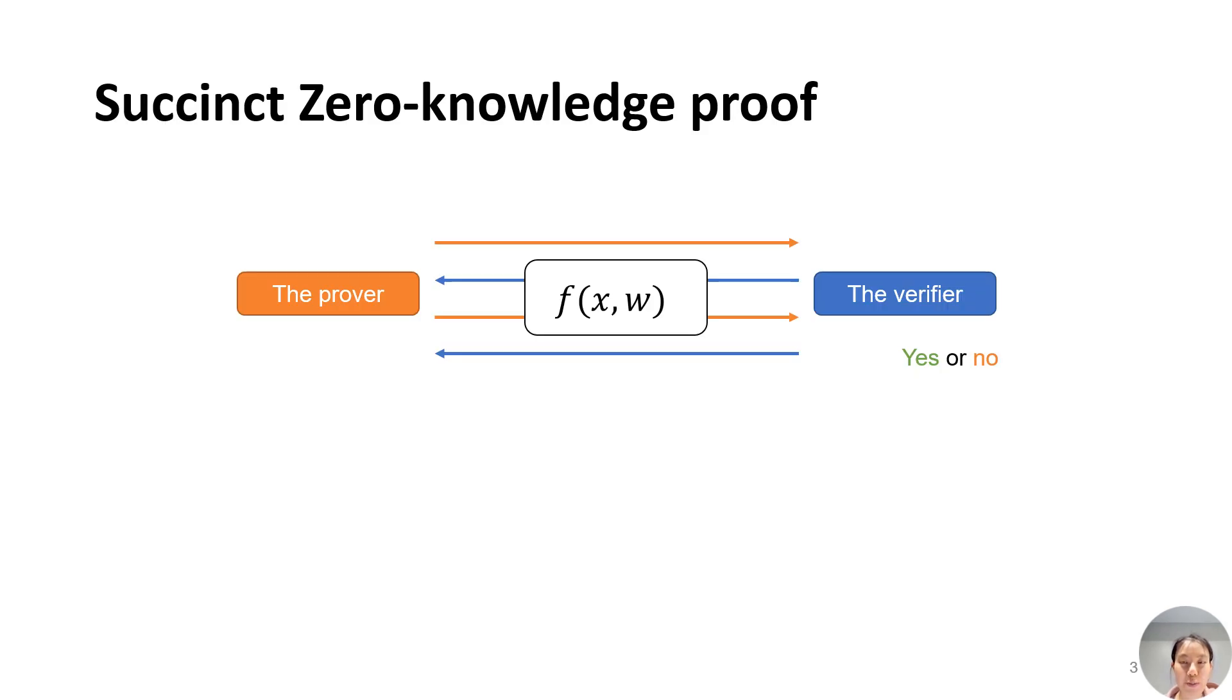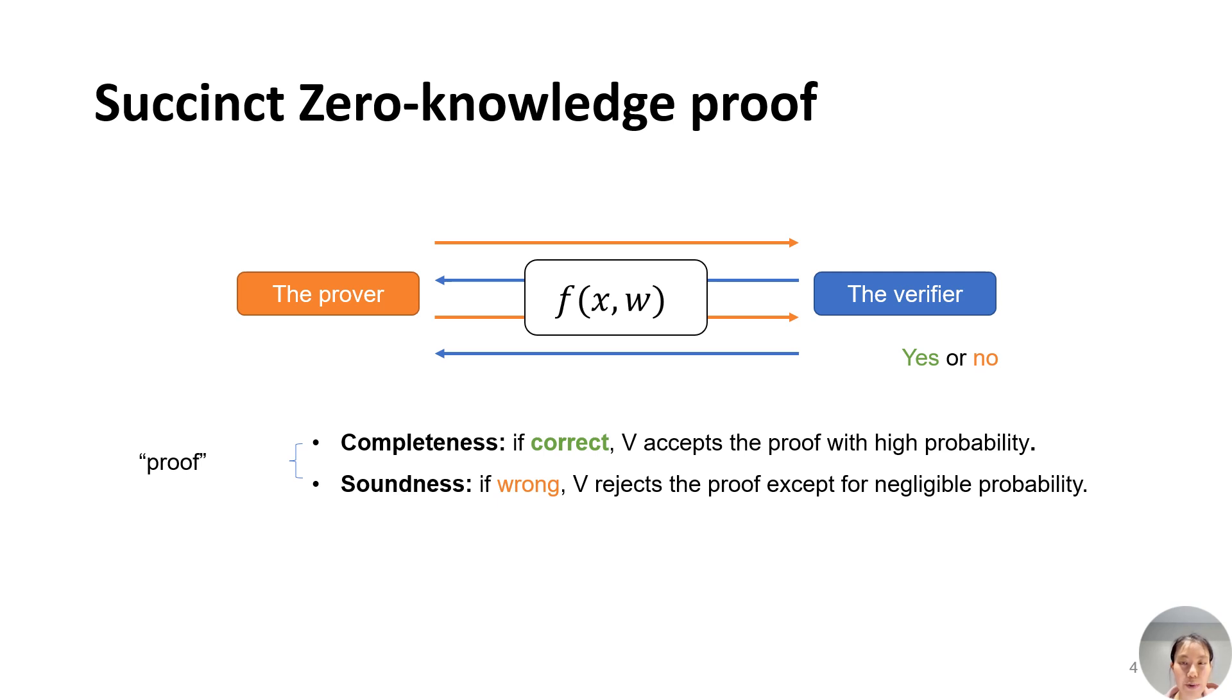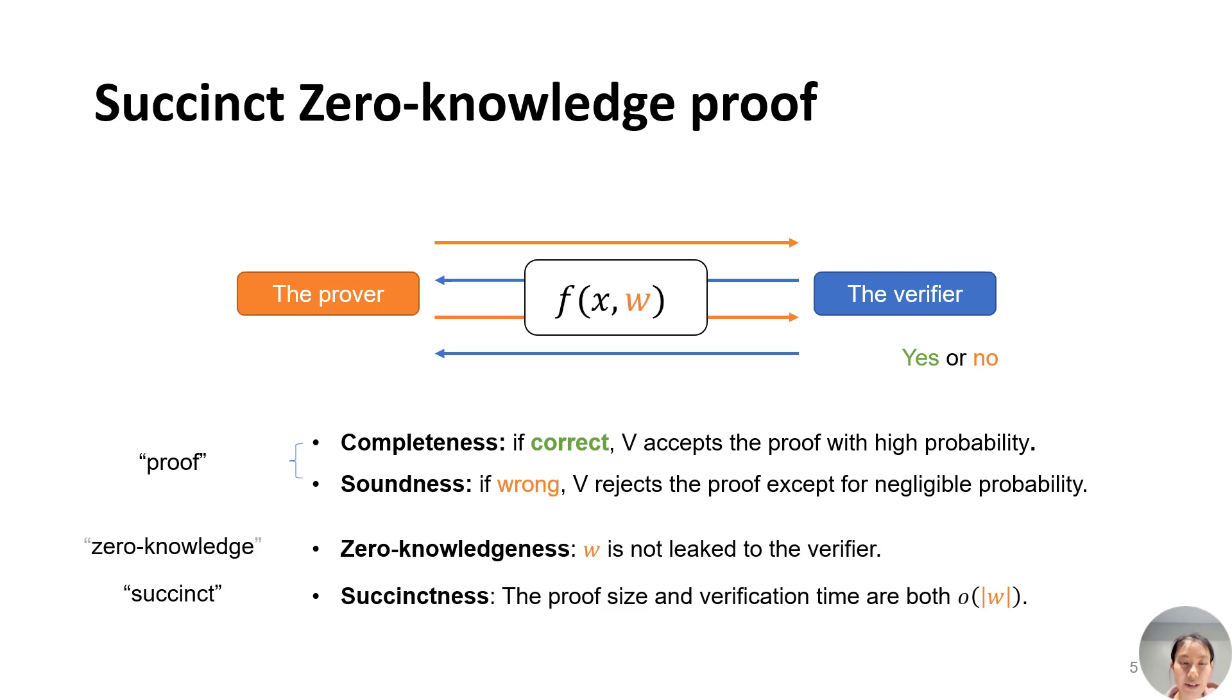Succinct Zero-Knowledge Proof helps a prover convince the verifier about the correctness of some statement F. To make the generated proof valid, a protocol should satisfy completeness and soundness. For completeness, it guarantees the verifier will accept the proof if the statement is correct. For soundness, it guarantees that if the statement is wrong, the verifier will reject it except for negligible probability.